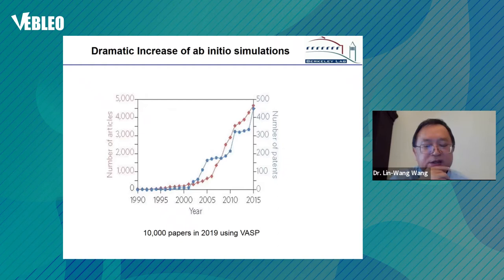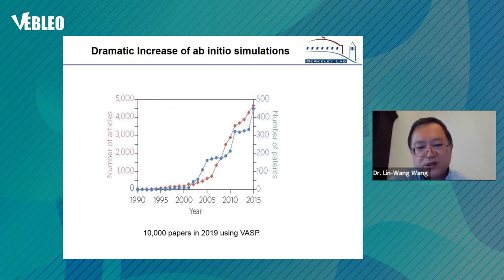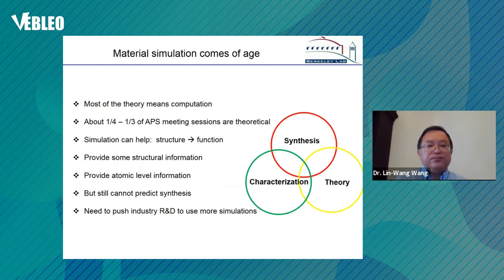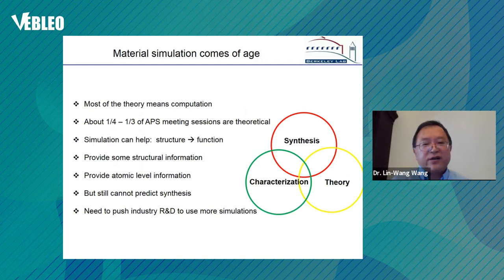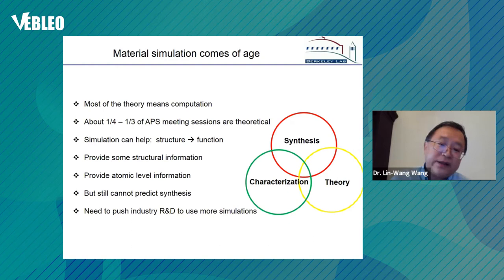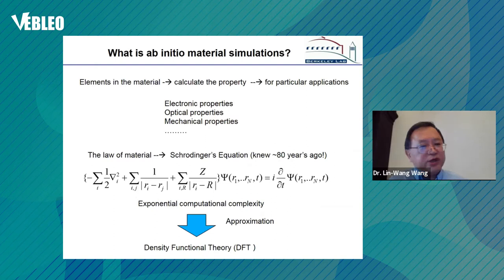So why have ab initio calculations really exploded exponentially in recent years? For example, last year there were 10,000 papers using VASP for ab initio calculations. For those doing TEM and experiment, 'seeing is believing.' For us doing calculation, we say 'calculation is understanding.' In materials science there are three pillars of research: synthesis, measurement and characterization, and theory. Right now, the majority of so-called theory is really ab initio calculations.